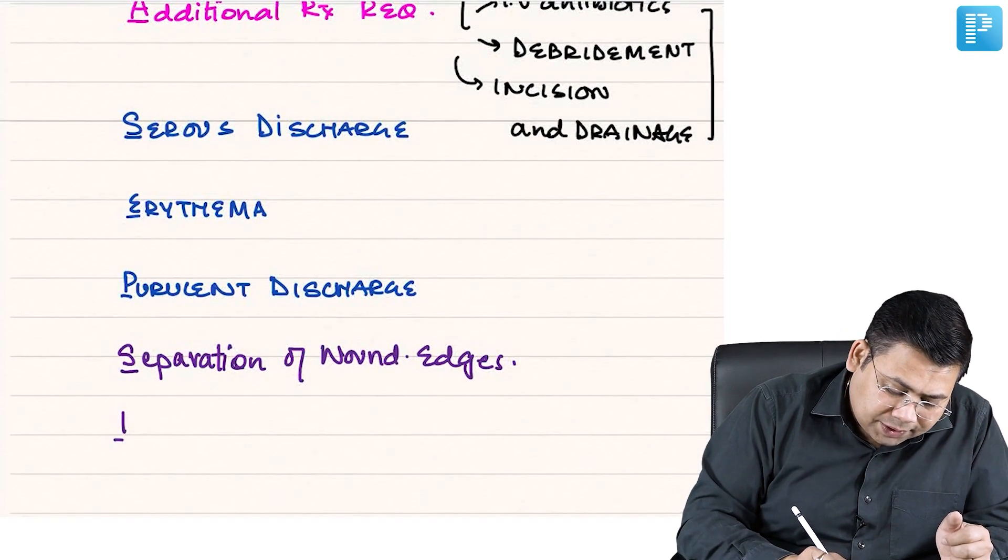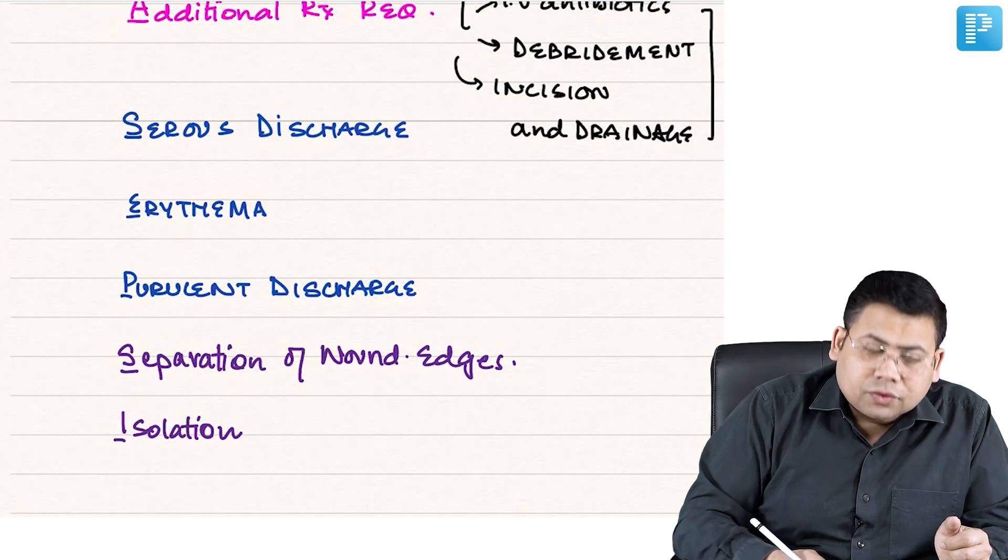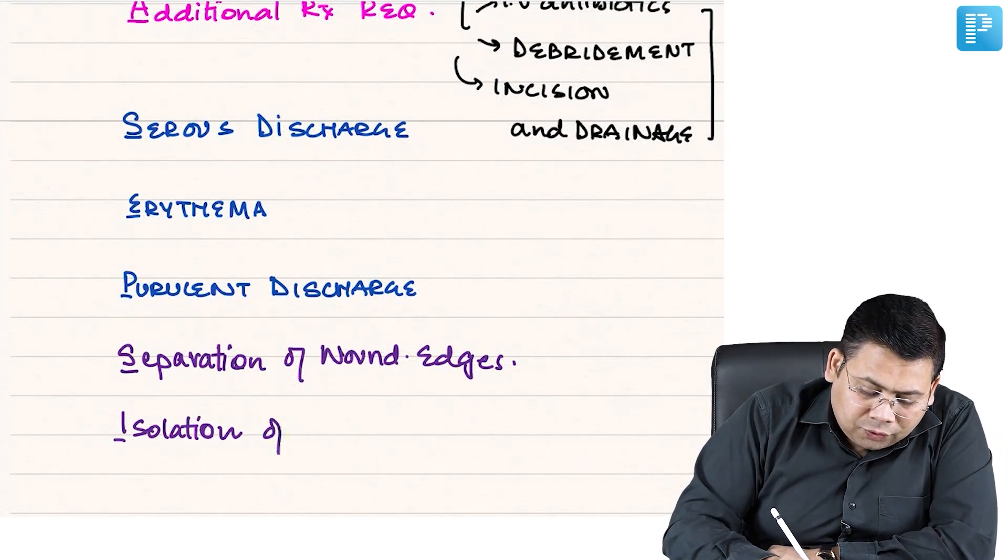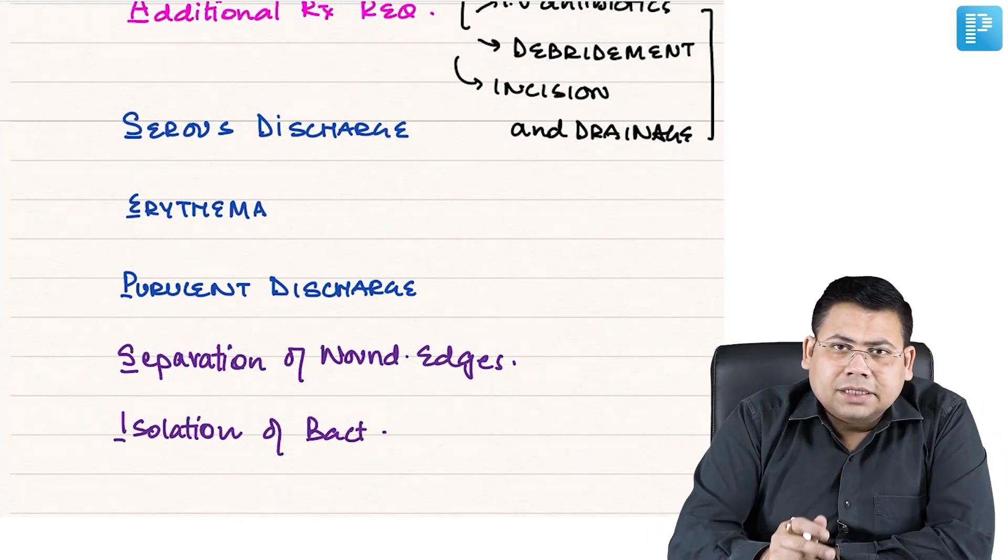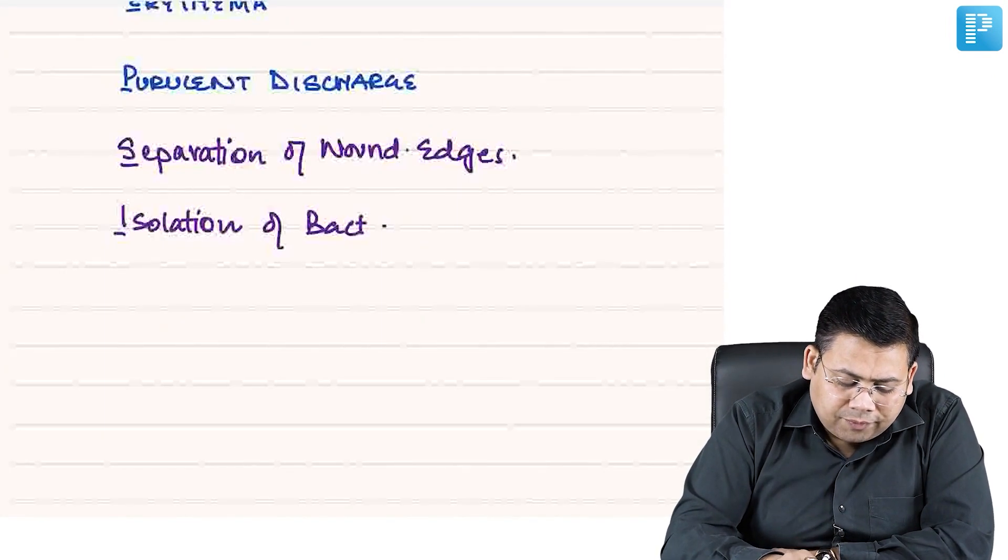Then E stands for... P... S... I stands for isolation of bacteria. Isolation of bacteria. Now what do you mean by isolation of bacteria? It is a culture that we require and we have taken out culture. So isolation of bacteria.